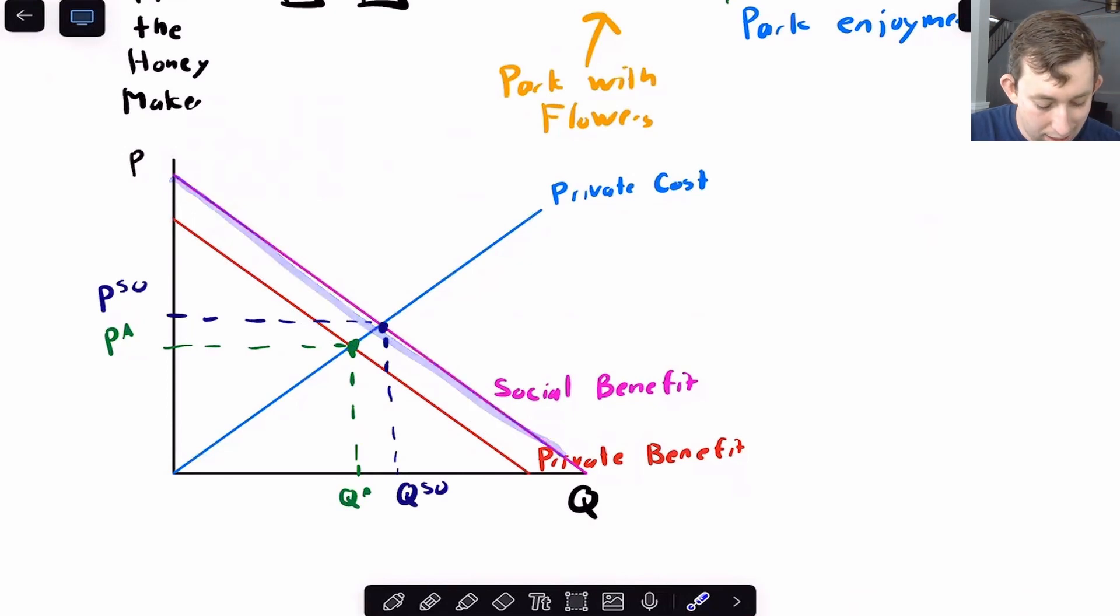So this is now sort of a marginal external benefit rather than a marginal external cost. And you can see that compared to this green optimum, this green competitive equilibrium, the new socially optimal point is going to be at a higher price and a higher quantity